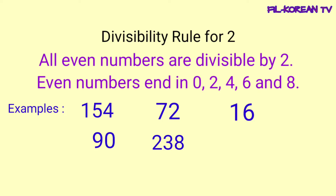Tingnan ninyo yung last digit ng bawat number. Yan lang ang titingnan ninyo. Kapag ang number ay nagtatapos sa 0, 2, 4, 6, at 8, yan ay even number at yan ay divisible by 2. At kapag ang number ay hindi even number, syempre hindi rin sya divisible by 2.